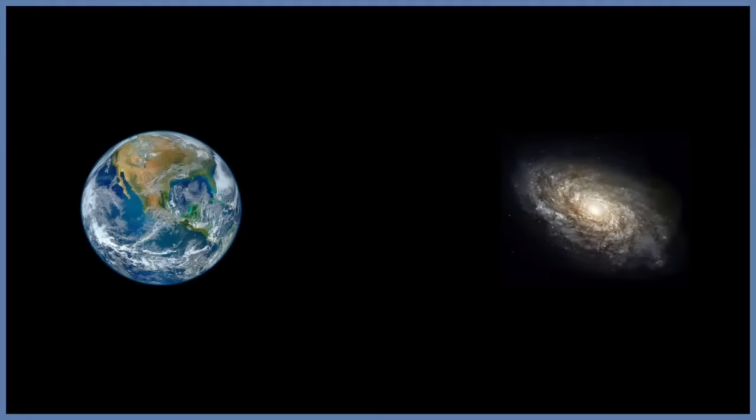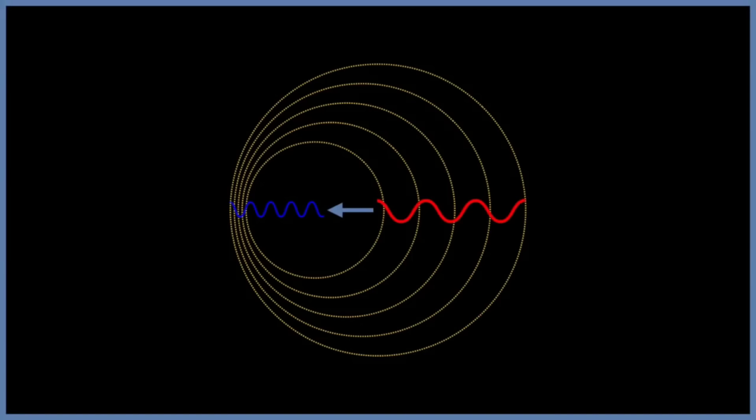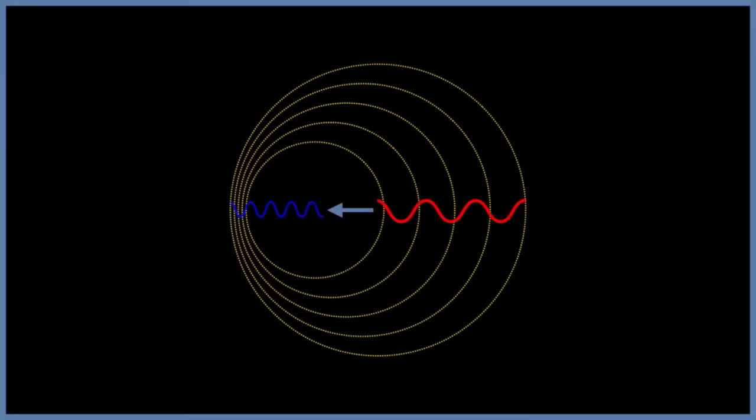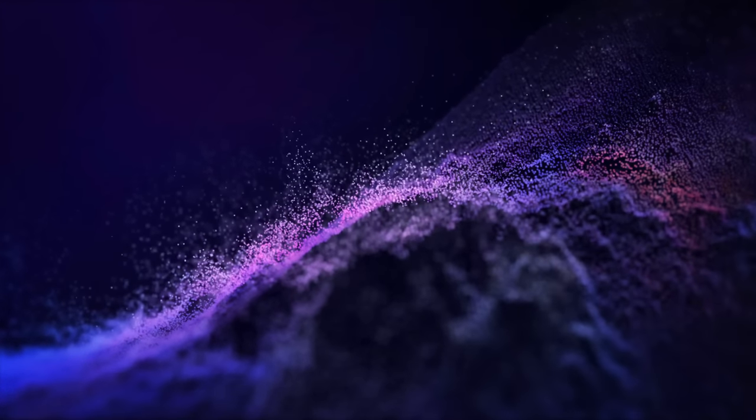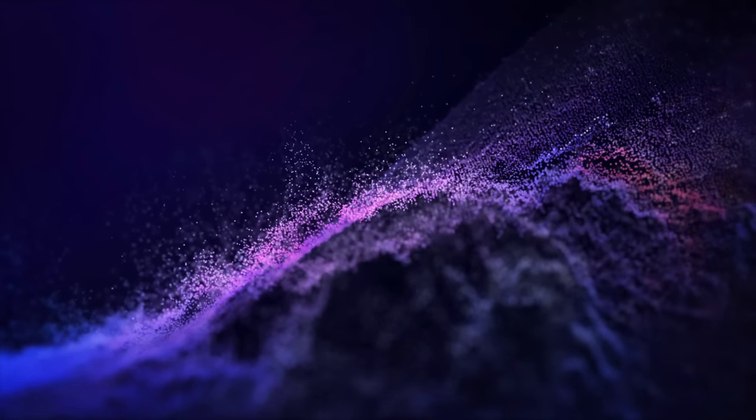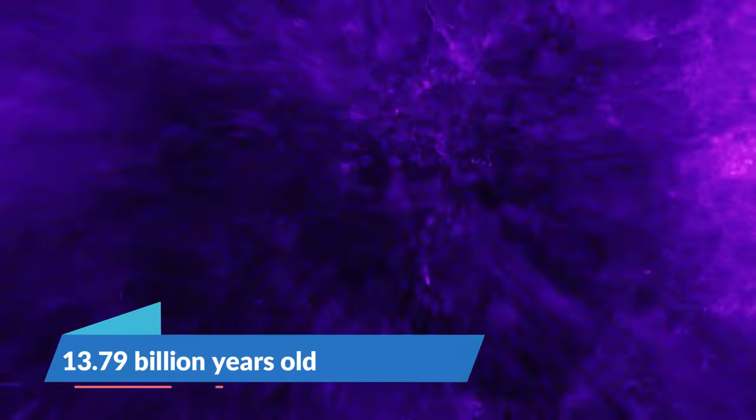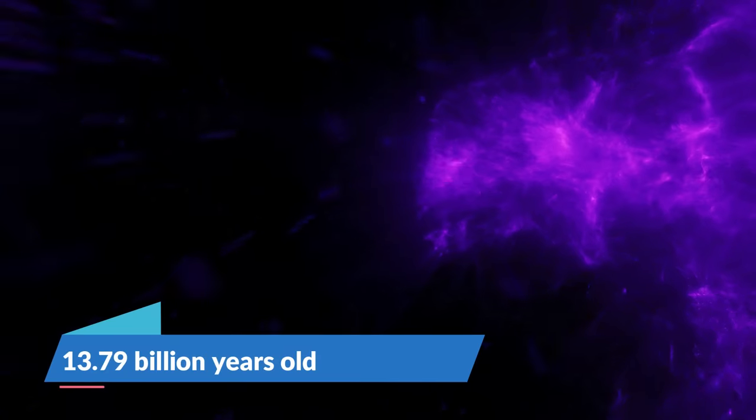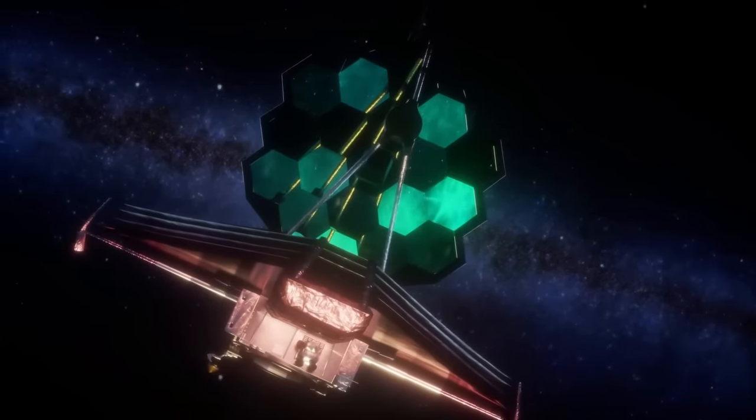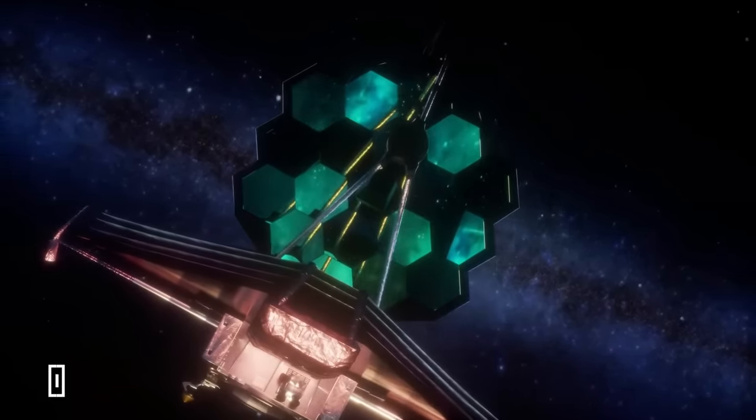To determine the age of distant objects, researchers use redshift, where light undergoes stretching as it travels, shifting the spectrum into the red region. The farther an object, the older it is, and more redshift waves appear. Initially, an estimate suggested our universe was about 13.79 billion years old, the accepted standard model. However, Webb's discoveries challenged these models.